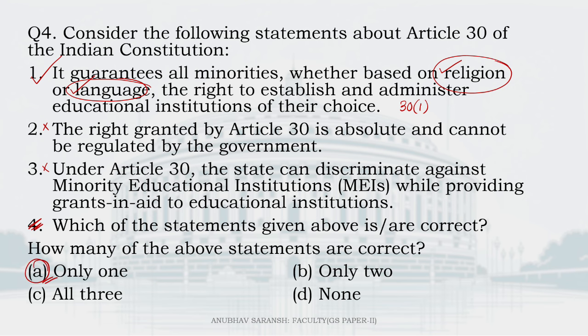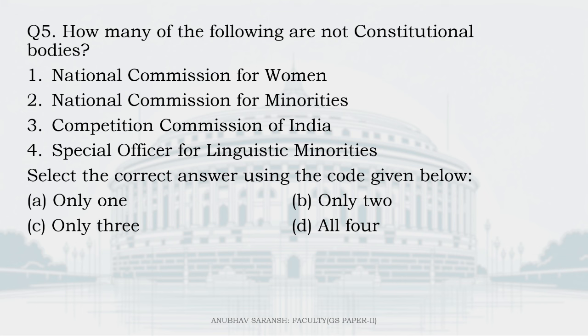Moving on to the last question: how many of the following are NOT constitutional bodies? National Commission for Women — formed in 1992 by a statute, the NCW Act — not a constitutional body. The National Commission for Minorities — established in 1992 through the NCM Act — a statutory body. The Competition Commission of India — established in 2003 under the Competition Act of 2002 — also a statutory body.